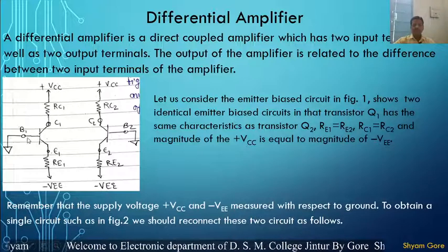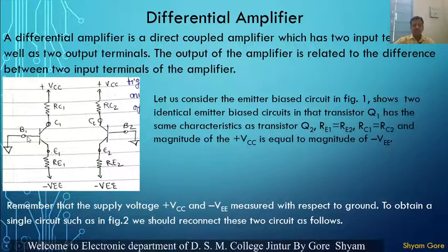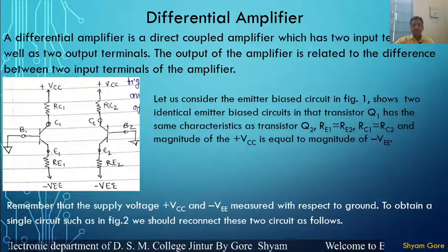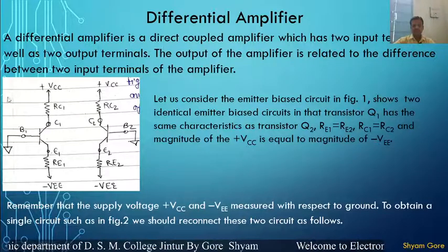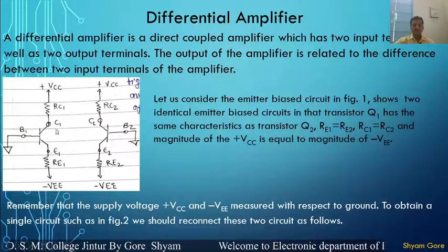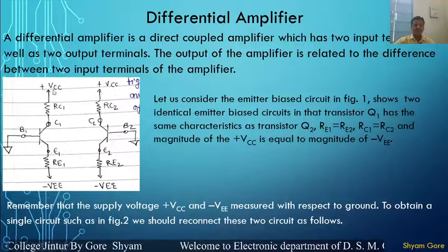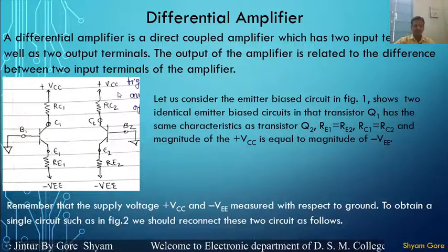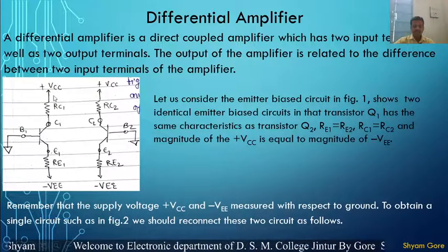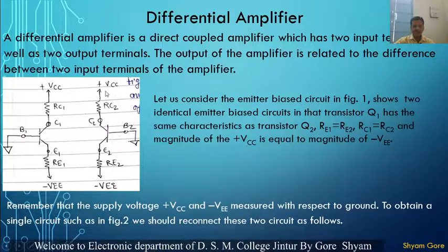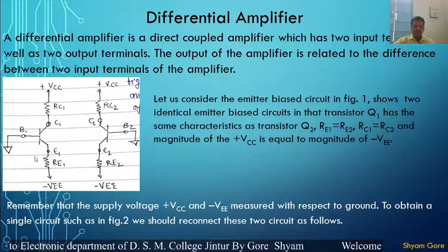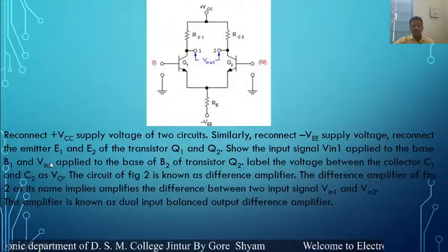Now, the plus Vcc, that is the supply voltage, is measured with respect to ground. To obtain a single circuit from these two amplifiers, we should reconnect the two circuits as follows. Let us reconnect the Vcc and reconnect the Vee — meaning this Vee and that Vee are connected with each other, and the Vcc is connected with each other, so a common Vcc and common Vee are taken. Similarly, the Re is also reconnected.